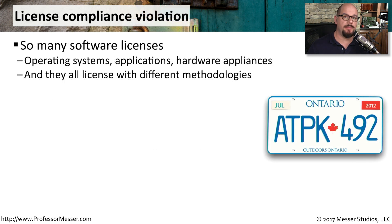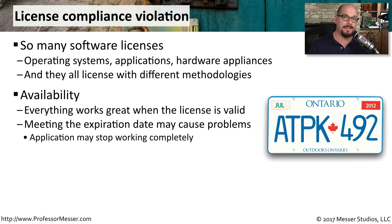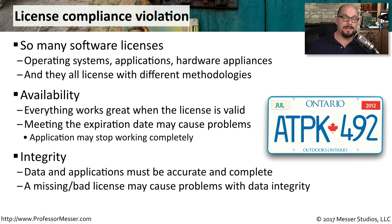Software licenses can become a significant security issue. There are licenses associated with every piece of software we're using — it could be an operating system, an application, or even hardware appliances that have software requiring a valid license. Each one of these different technologies requires a different form to purchase the license and a different method to enable the license on that device. From a security perspective, we want all of these devices and applications to always be available. If the license suddenly becomes invalid, an application may stop working completely, and from an integrity perspective, an invalid license may only allow an application to work part of the time or make only some data available.